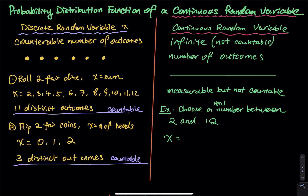What other examples are good for explaining discrete random variable? First, we roll two fair dice and let x be the sum of the two face values. The smallest sum you can get is one plus one, which equals two. The highest sum is six plus six, which equals 12. So x can be any value between two and 12 — two, three, four, five, six, seven, eight, nine, ten, eleven, twelve — giving 11 distinct outcomes. Every single distinct outcome has its own probability.